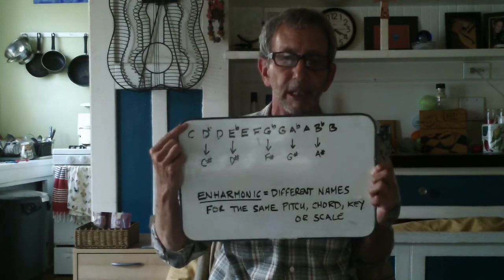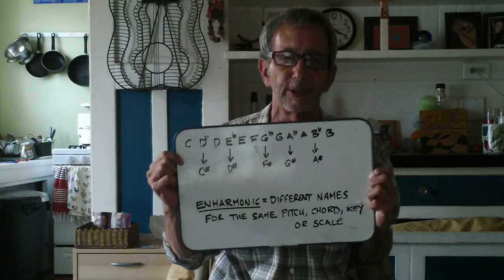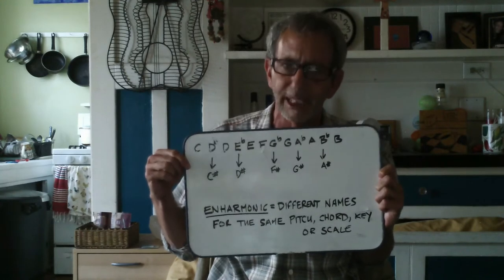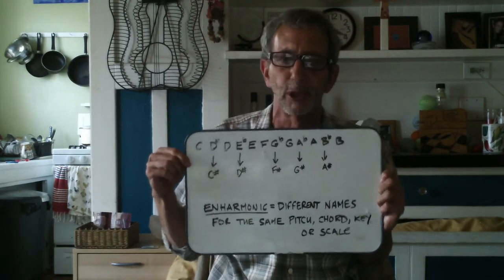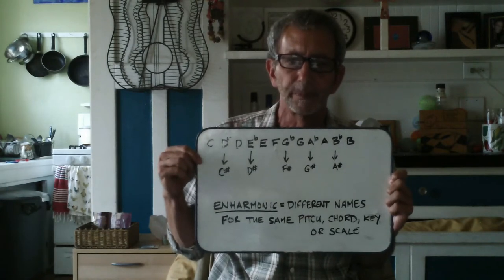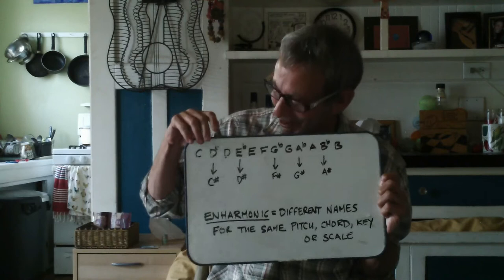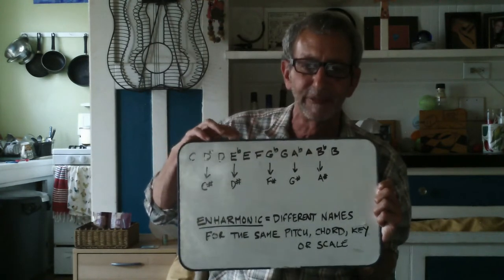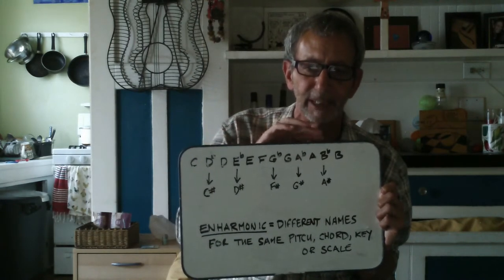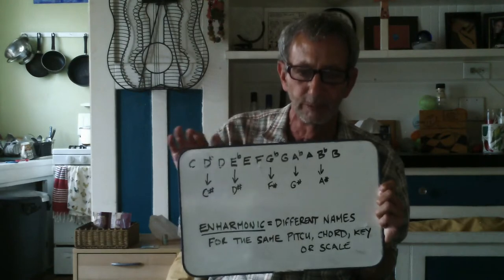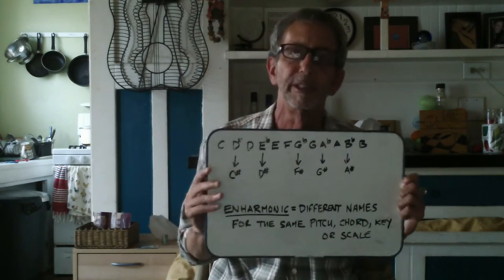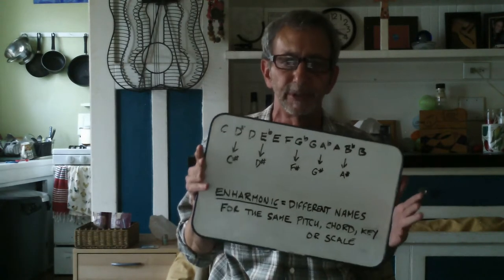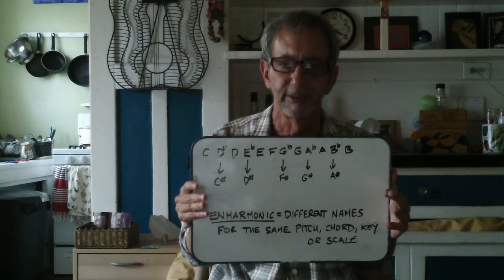If you look at the chromatic series listed above — and I tend to default to flats, which is odd because guitar is more of a sharp-friendly instrument — we have C, D-flat, D, E-flat, E, F, G-flat, G, A-flat, A, B-flat, B. Notice between E and F, and between B and C, there's no note in between. Those are the half steps we find in the key of C.